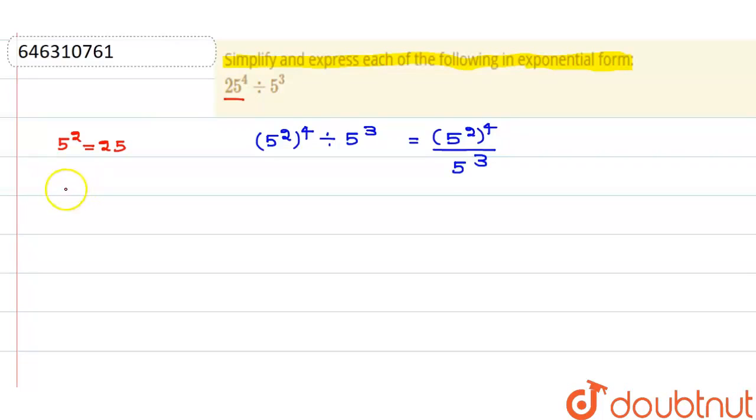Now you are going to apply this indices property which is (a^m)^n = a^(m×n). Similarly, you can apply this indices property that a^m upon a^n = a^(m-n).